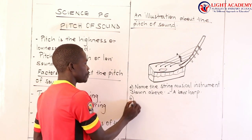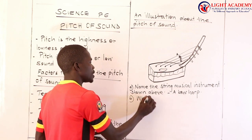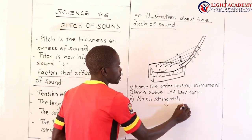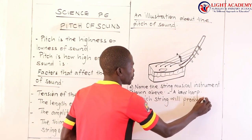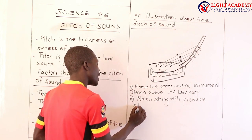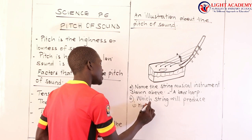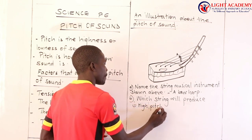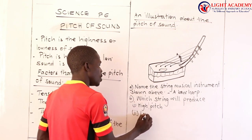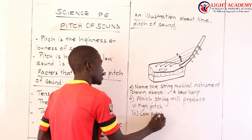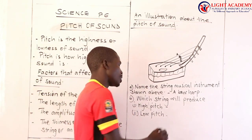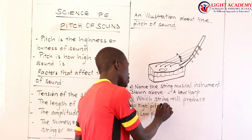Then Part B. Which string will produce Roman one — high pitch — and Roman two — low pitch? Roman one is high pitch, Roman two is low pitch. Which string will produce high pitch, and which will produce low pitch?